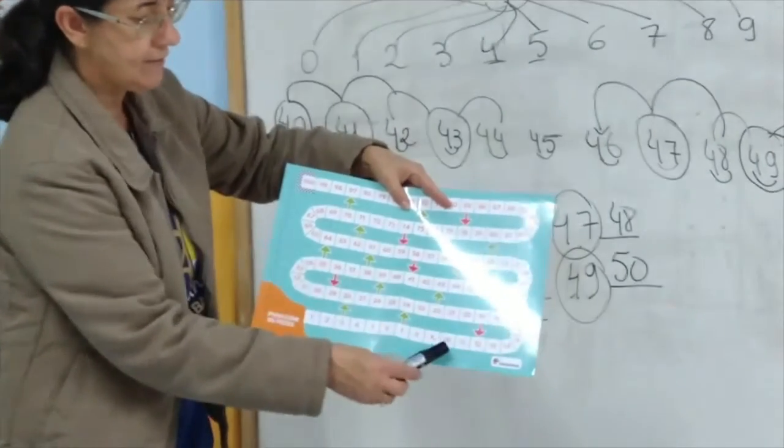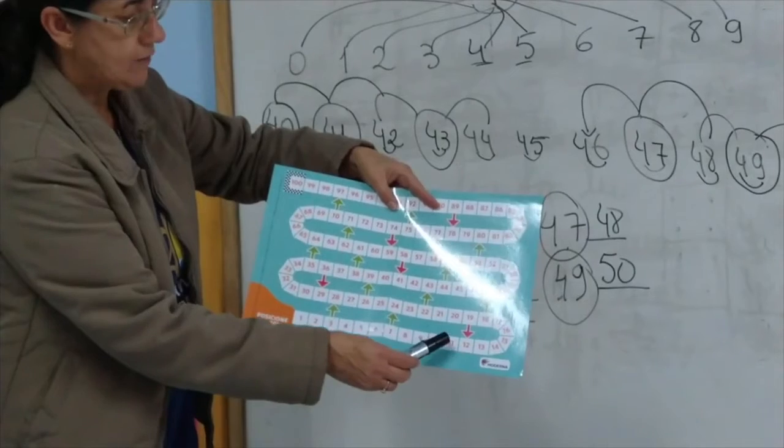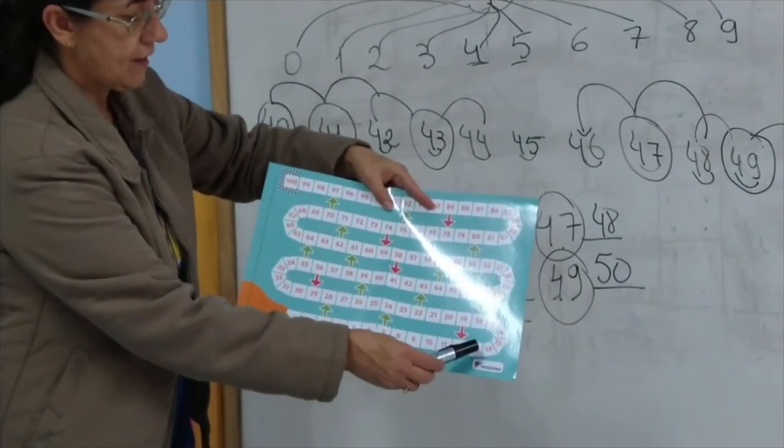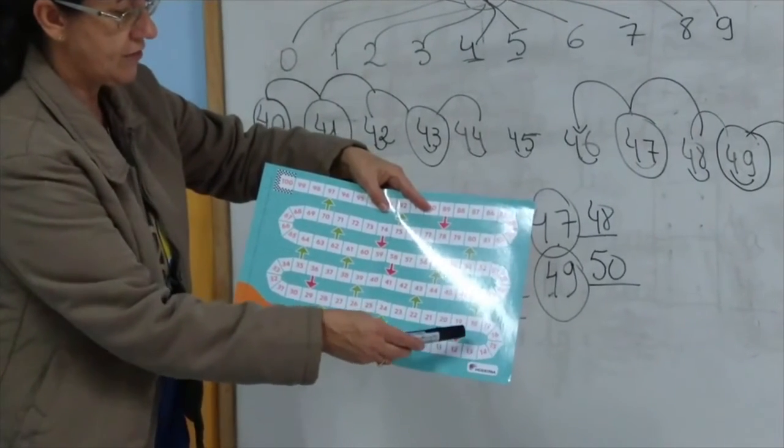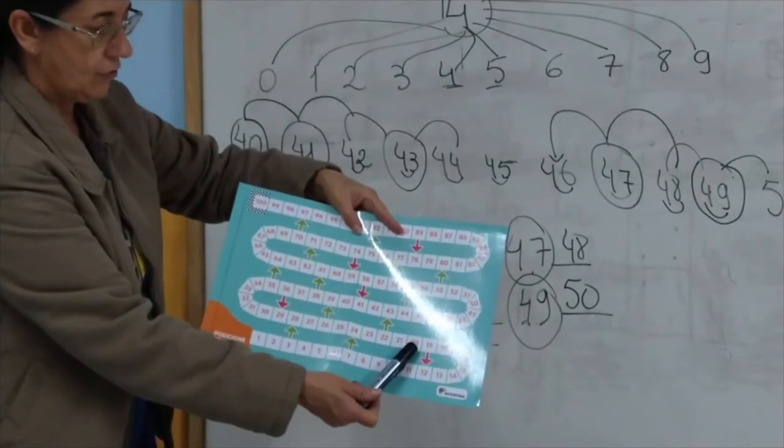Quando eu chegar aqui no 10, a família já recebe outro número. 10, 11, 12, 13, 14, 15, 16, 17, 18, 19. Já tem outra família.